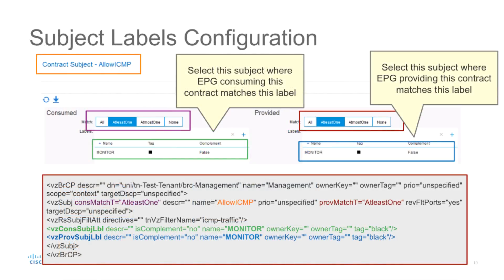Subject labels can be configured on the API like everything else in ACI. In this case, we're looking at a snapshot of the GUI for a particular contract subject called Allow ICMP. Here we can see that we can configure labels for consumed contracts as well as for provided contracts, and we can select whether we want to use one or more labels and what the matching criteria is — whether it is all, at least one, almost one, or none.